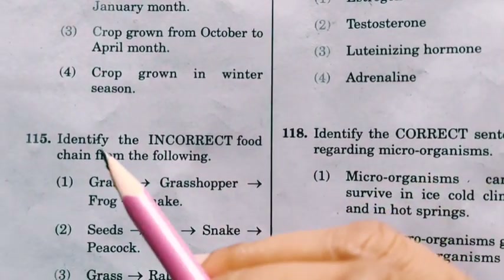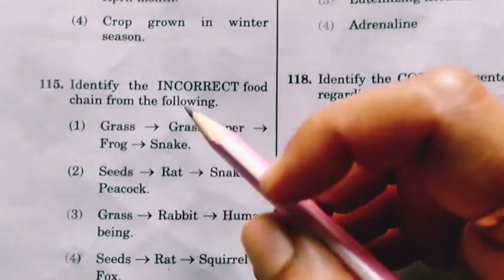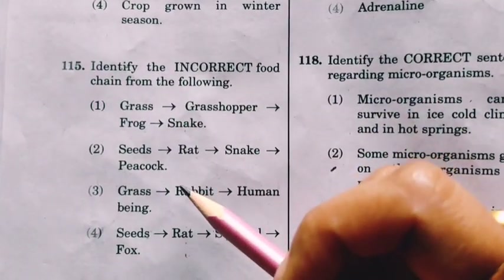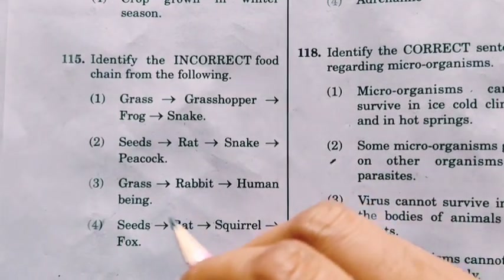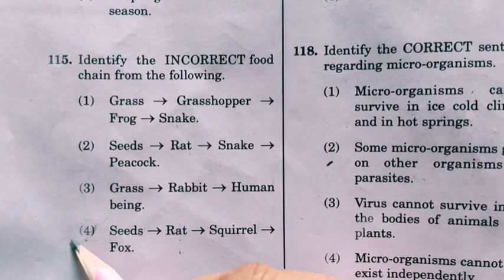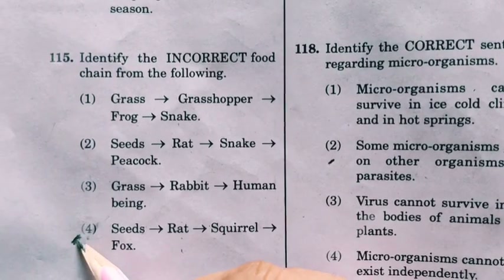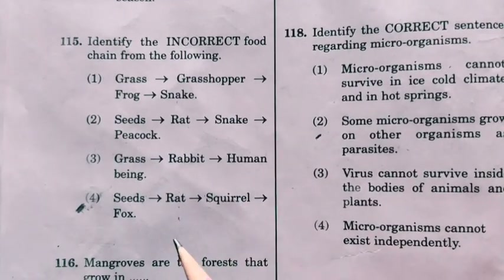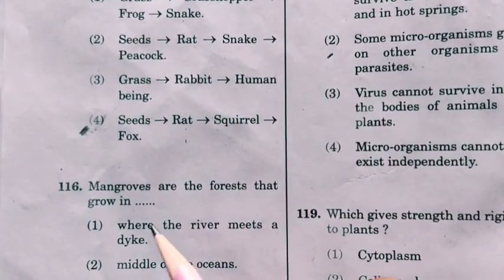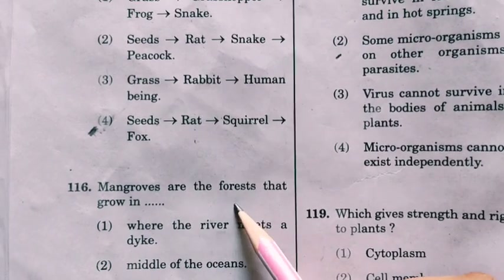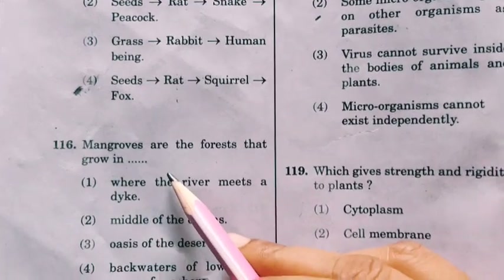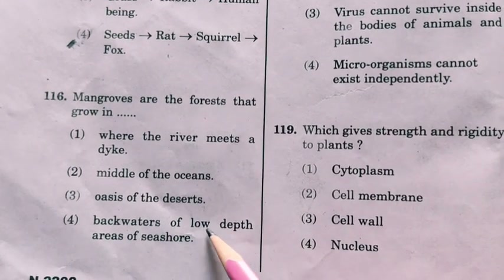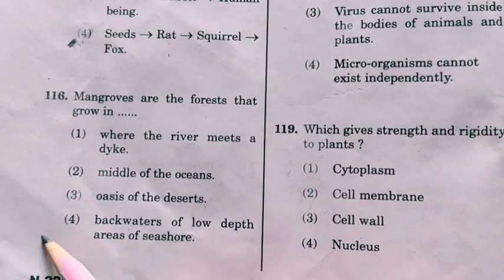Identify the incorrect food chain from the following. This question is a bit doubtful, but we will check it again. Next question: mangroves are forests that grow in the back quarters of low-depth areas of the seashore.